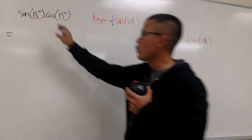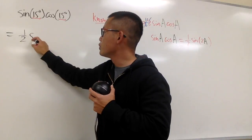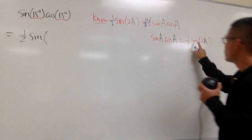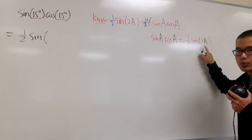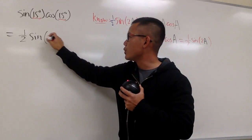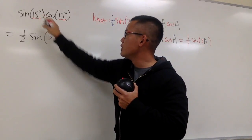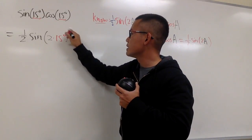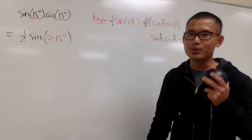And this is going to be 1 half. And we'll just have one sine function. And then we have to do 2 times a. So let me put down 2 times the a, which is the 15 degrees. And now, this is what we have to do.